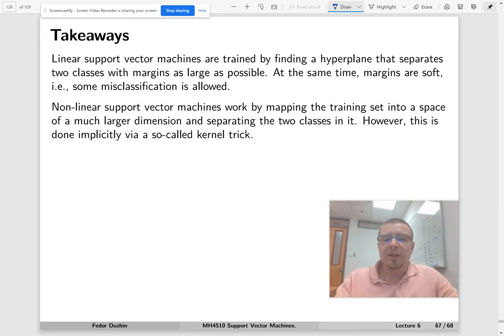Nonlinear support vector machines is basically the same thing, only with the help of a so-called kernel trick, we make the decision boundary nonlinear. Basically this could be our decision boundary, this could be our margins.